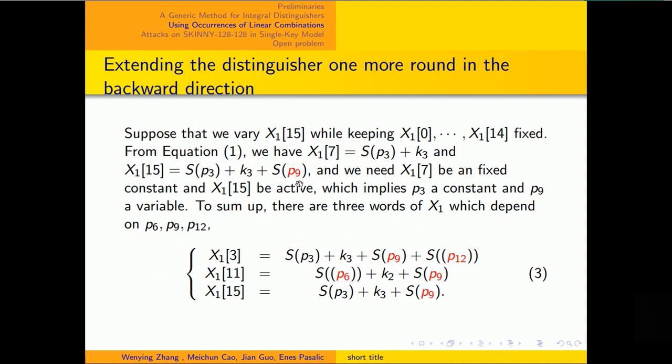We can also extend the distinguisher one more round in the backward direction. Suppose that we vary X1[15] while keeping the other words fixed. From equation 1, we have X1[7] equals S(P3) plus K3 and X1[15] equals S(P3) plus K3 plus S(P9). So when we need X1[7] to be constant, P3 must be active.